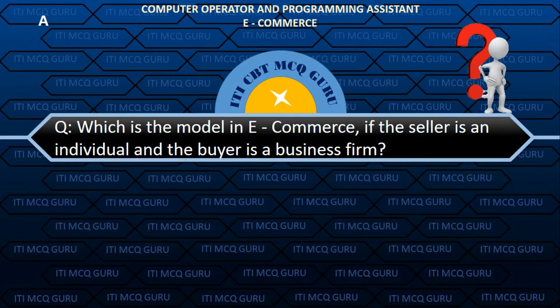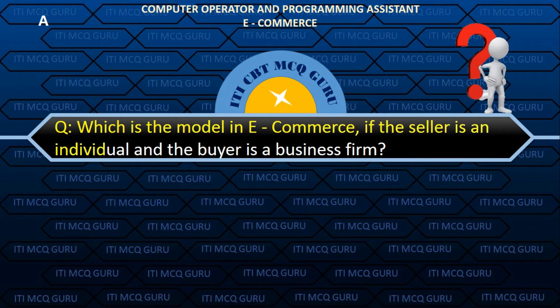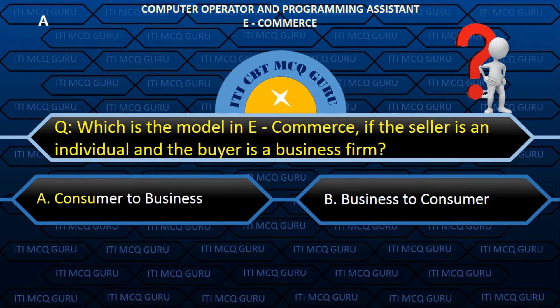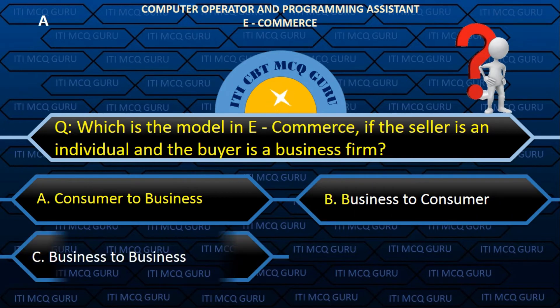Which is the model in e-commerce if the seller is an individual and the buyer is a business firm? A. Consumer to business.